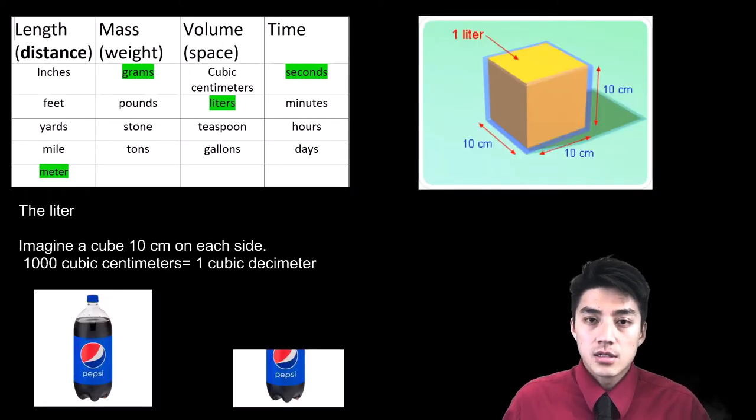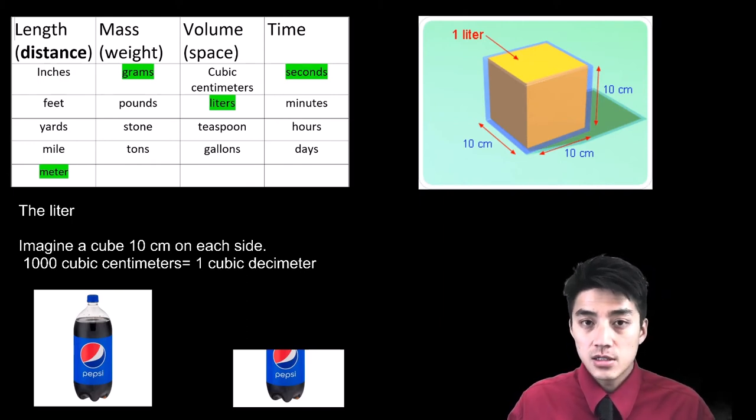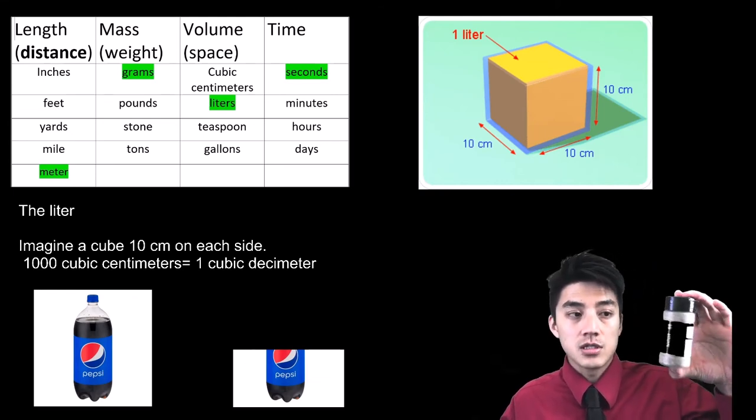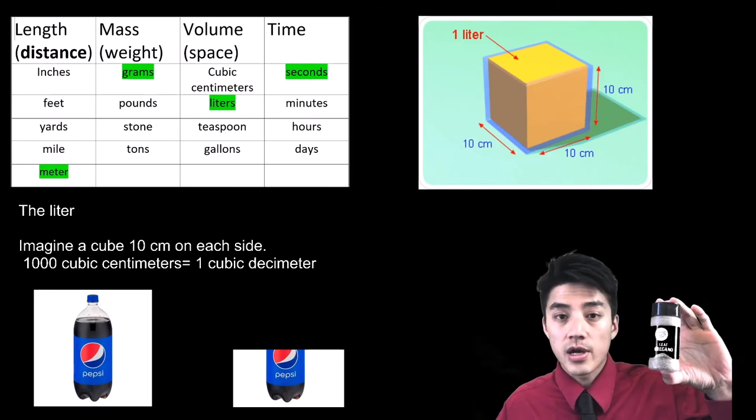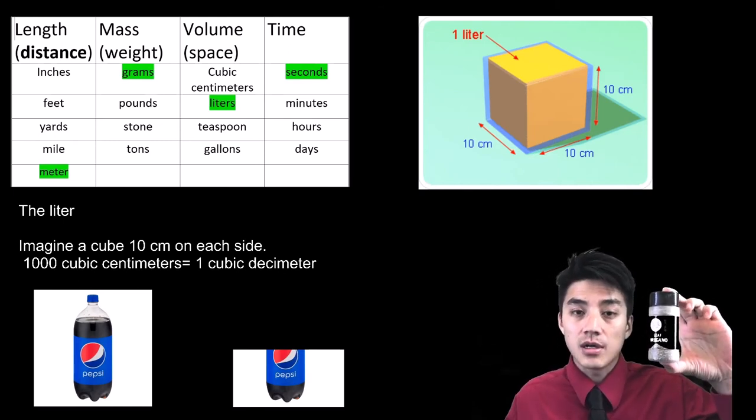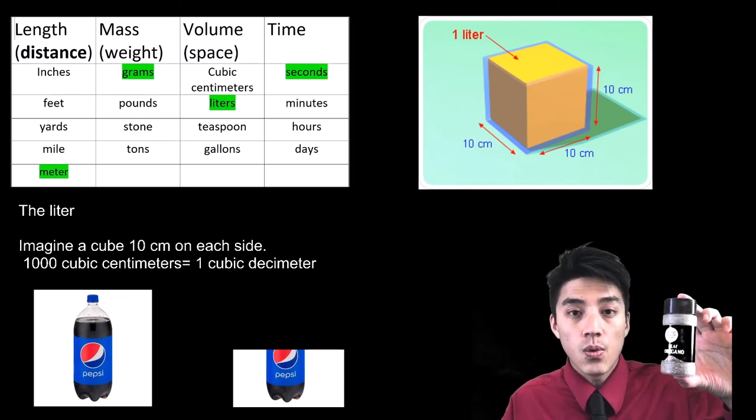The liter is a little bit trickier to define, but the formal definition is you have to imagine a cube that is 10 centimeters on each side or each edge. And that would be roughly the size of a liter. So to give you a visual, I have some herbs for the kitchen. This is oregano, leaf oregano. So this thing is roughly 10 centimeters right here. And later on, you'll learn that 10 centimeters is the same as 1 decimeter.